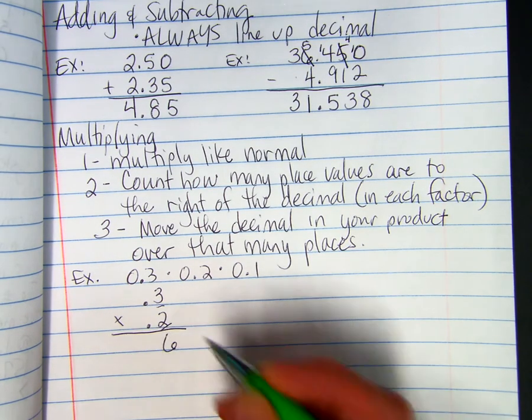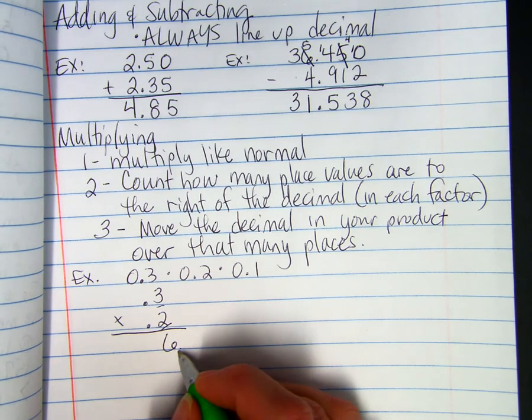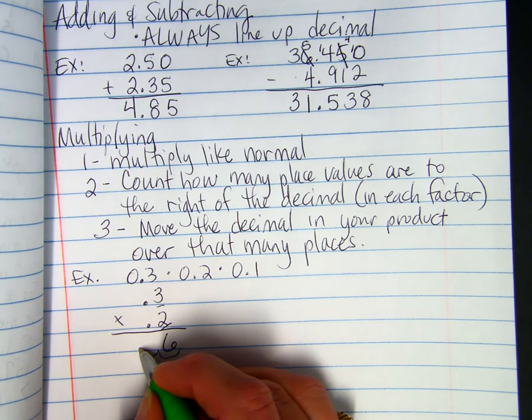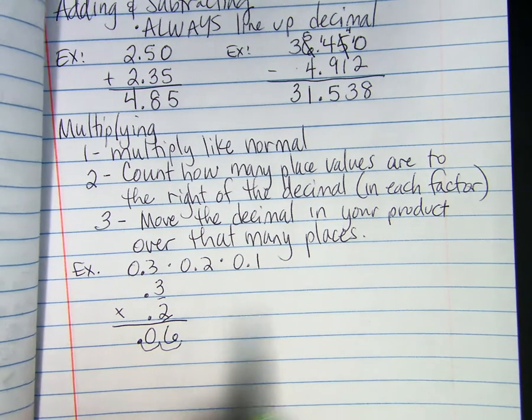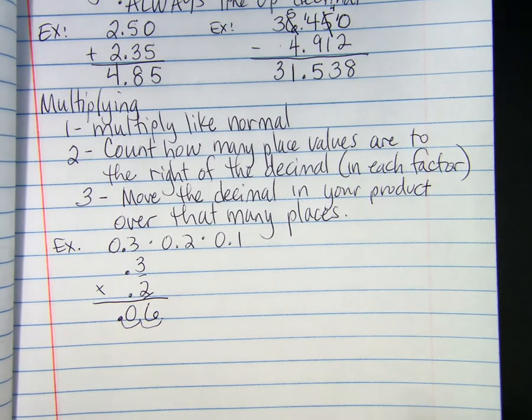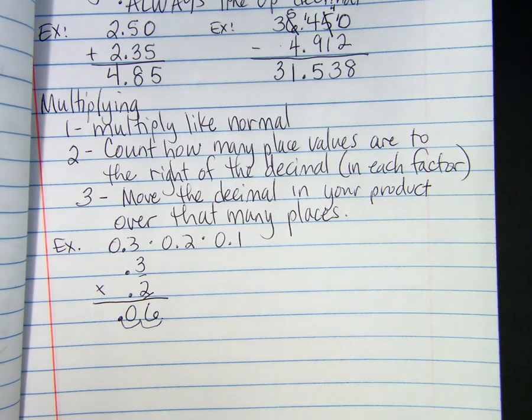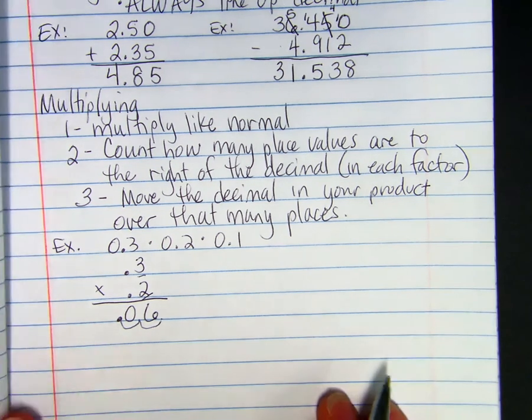Count up the place values. We have one, two. The decimal on six is right at the end. And, we just move it over two places. Put a decimal there. So, three tenths times two tenths is the same thing as six hundredths. And, if you think of them like fractions, you can kind of see that three tenths times two tenths would be six hundredths.